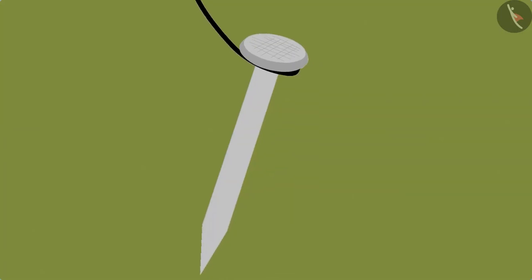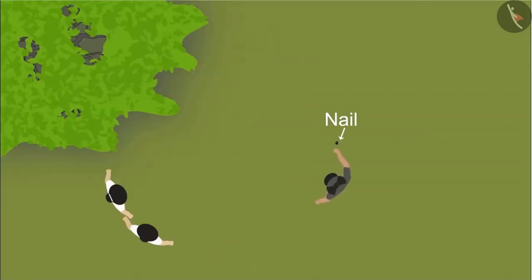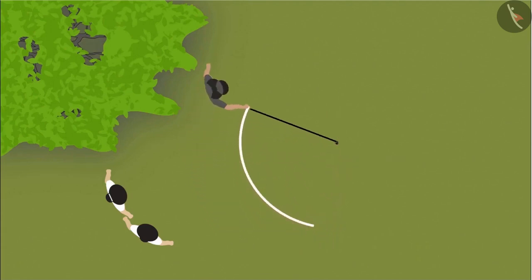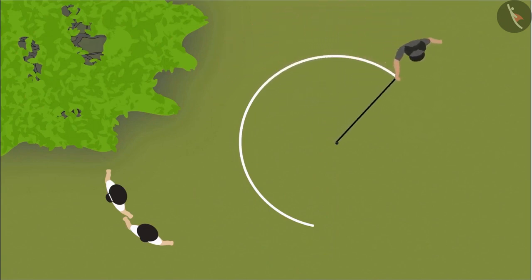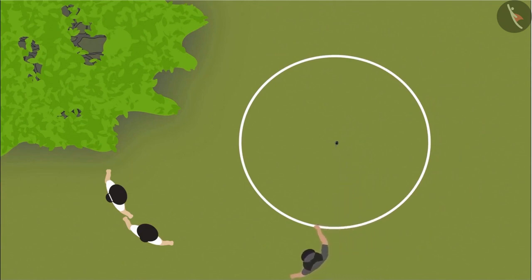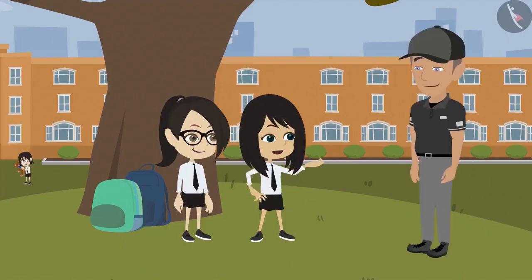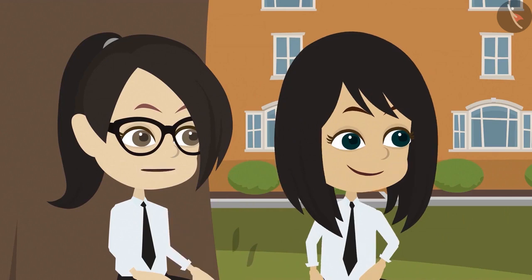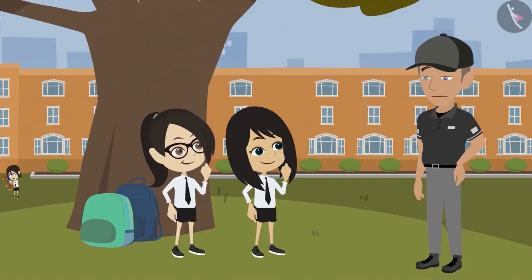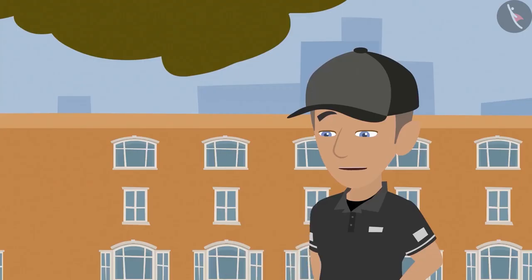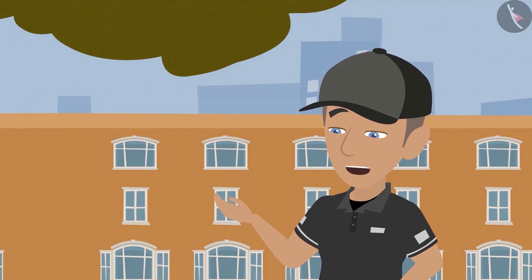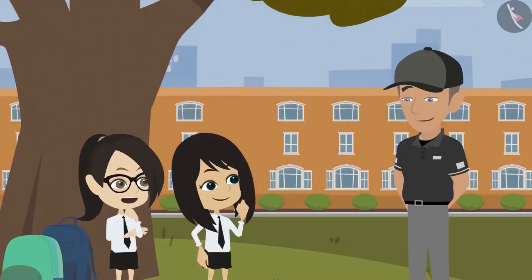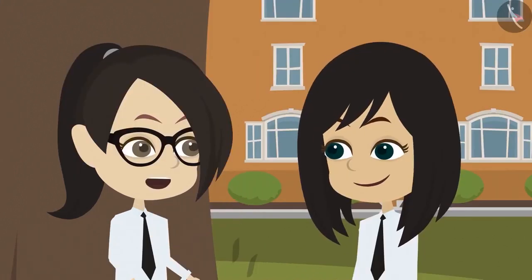To make a circle using nail and thread: first tie the thread to the nail, then hammer the nail into the ground at one place. Hold the front end of the thread firmly and walk around the nail, using a stick or sharp object to mark the circle on the ground. A complete circle is made. Using this method, we can make very big circles of every size.